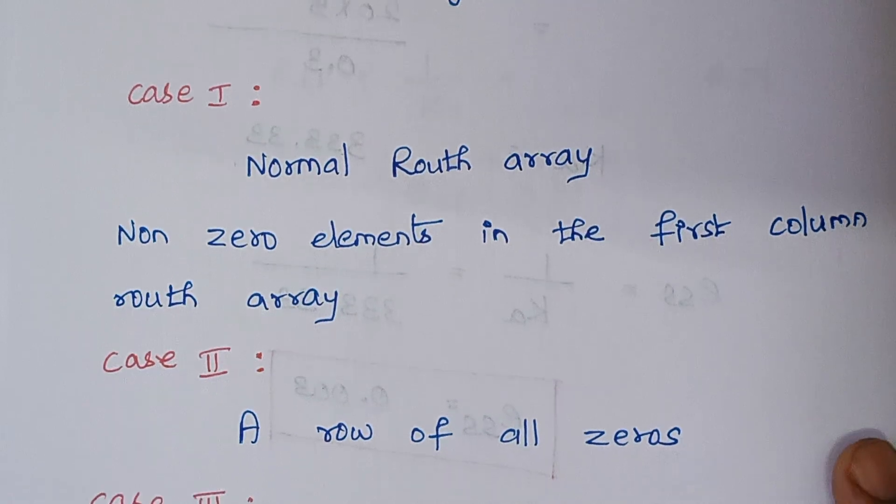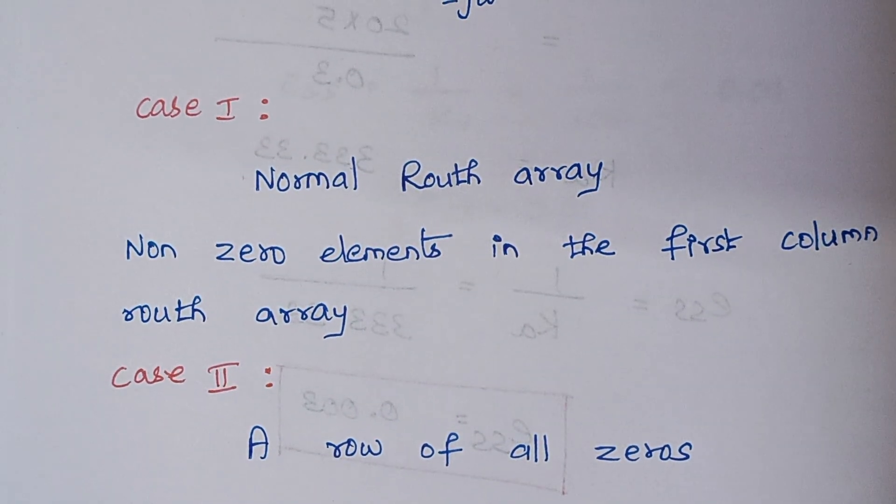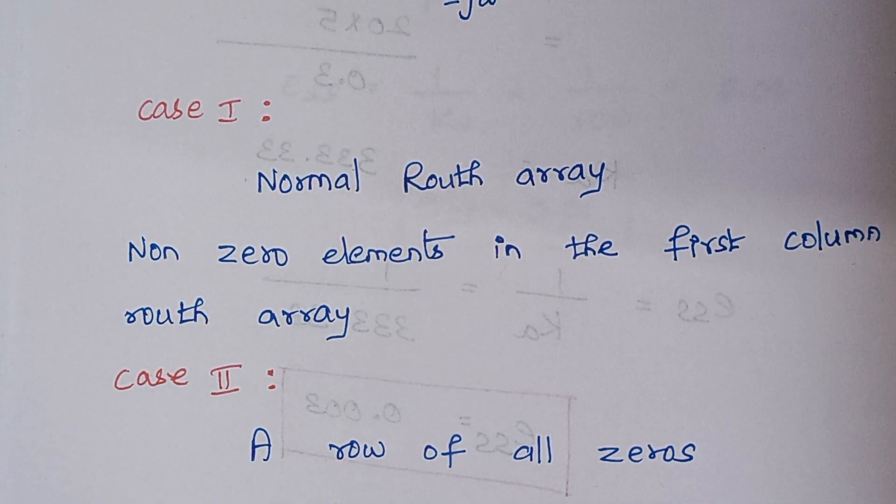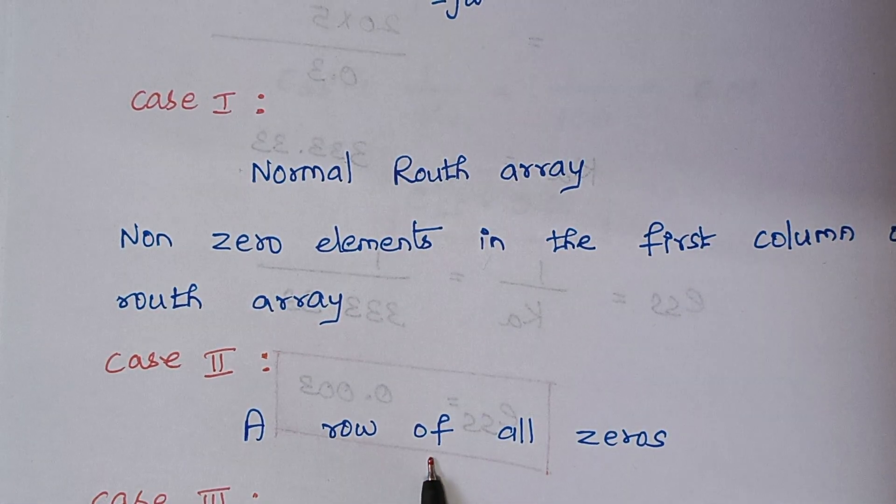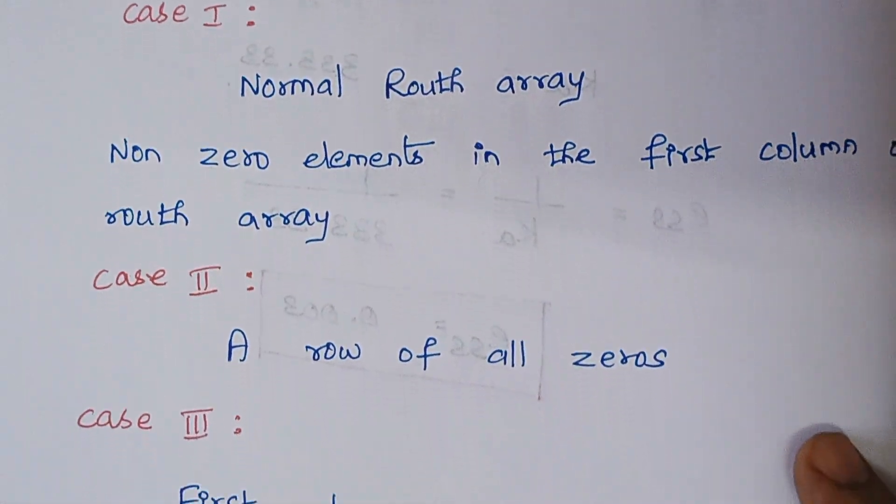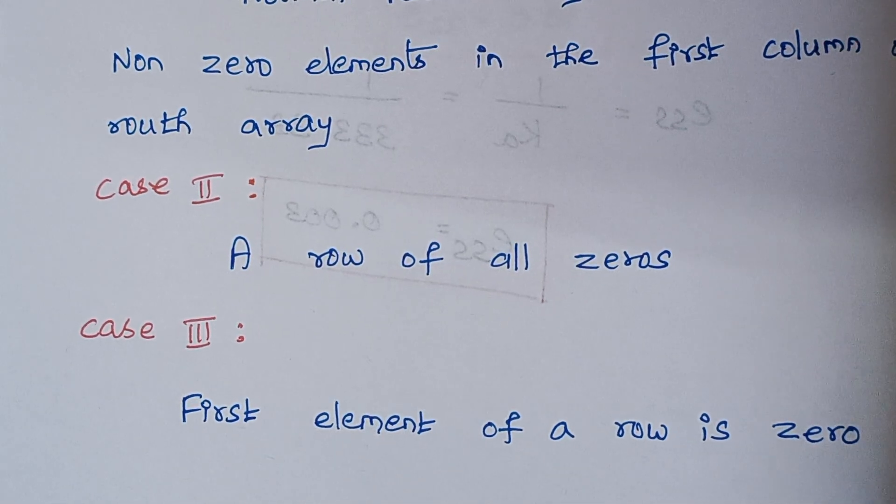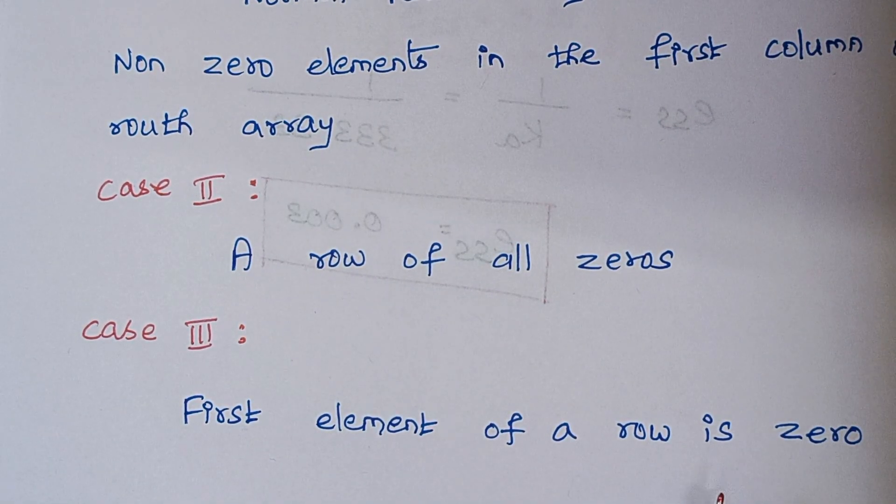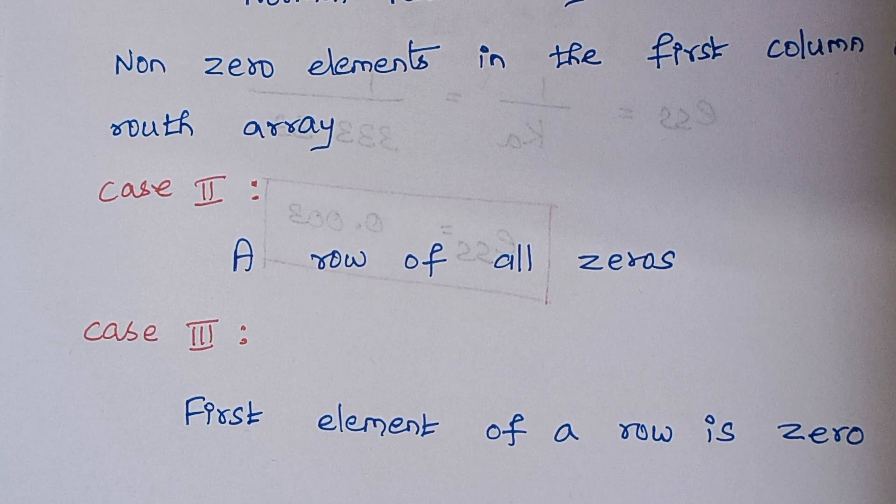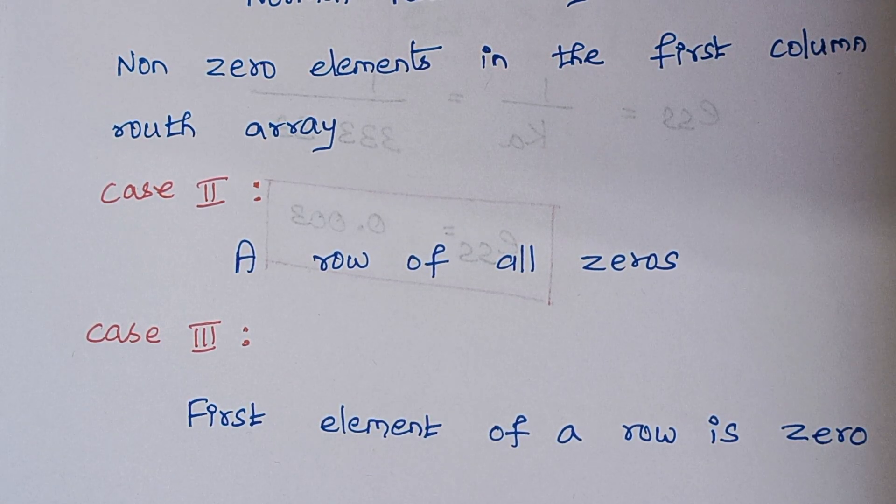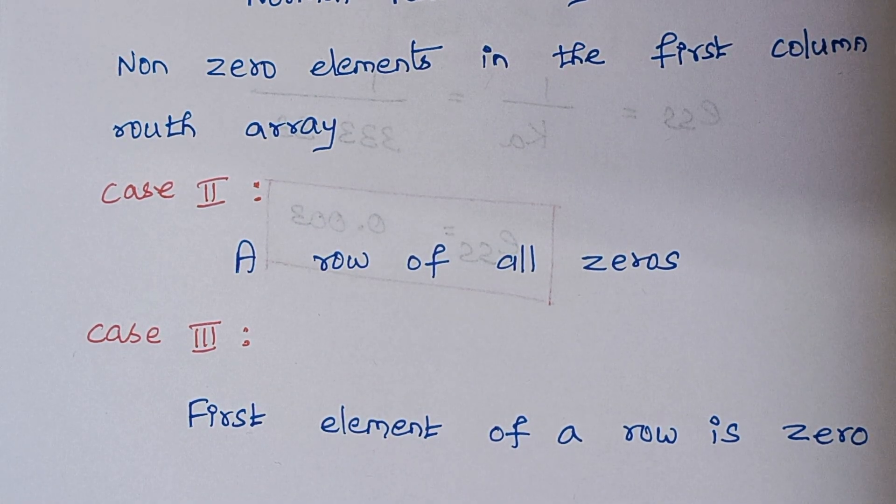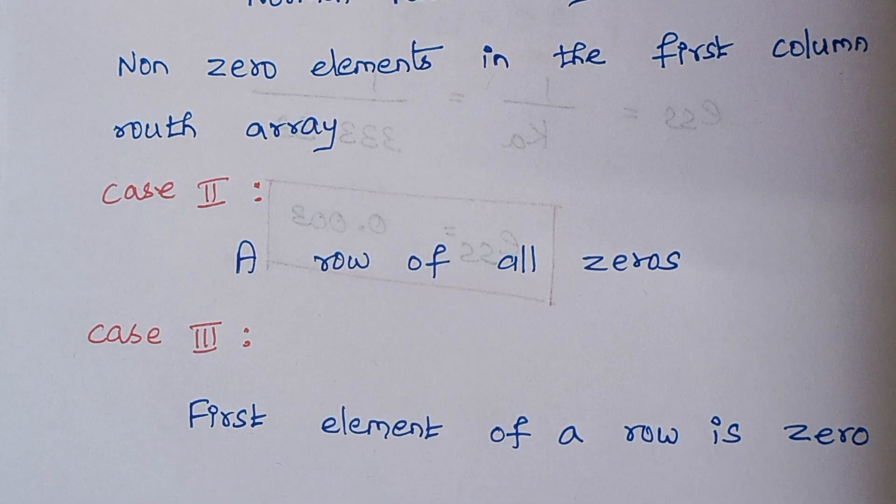Then the next category is a row of all zeros. Suppose if you have a row of all zeros, then there is a special procedure to solve this problem. Then the third category is first element of a row is zero. That is you will be having lot of rows. Among the rows, the first element will be zero. If this is the case, then we have to solve by using some special methods. Hope you people understand the concept here. Thank you.